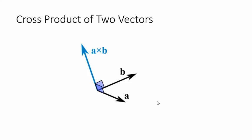In this video we're just going to focus on finding a formula to find the components of this cross product vector if we know the components of these two vectors. The key is that our cross product vector is perpendicular to our two vectors.